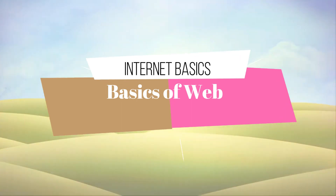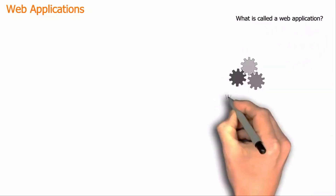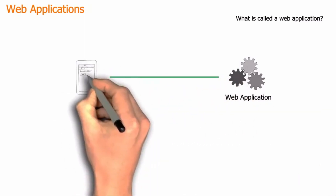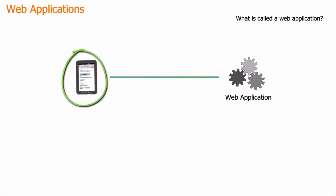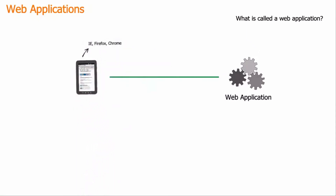So, in this video, we are going to look at the basics of web applications, or how web applications work. First of all, let's understand what's called a web application. A web application is a piece of software which can be accessed from a browser. A browser is an application that you use for browsing the internet — examples are IE, Firefox, Google Chrome, or Safari. Technically speaking, we can call a web application a web server, although a web server can host multiple web applications.